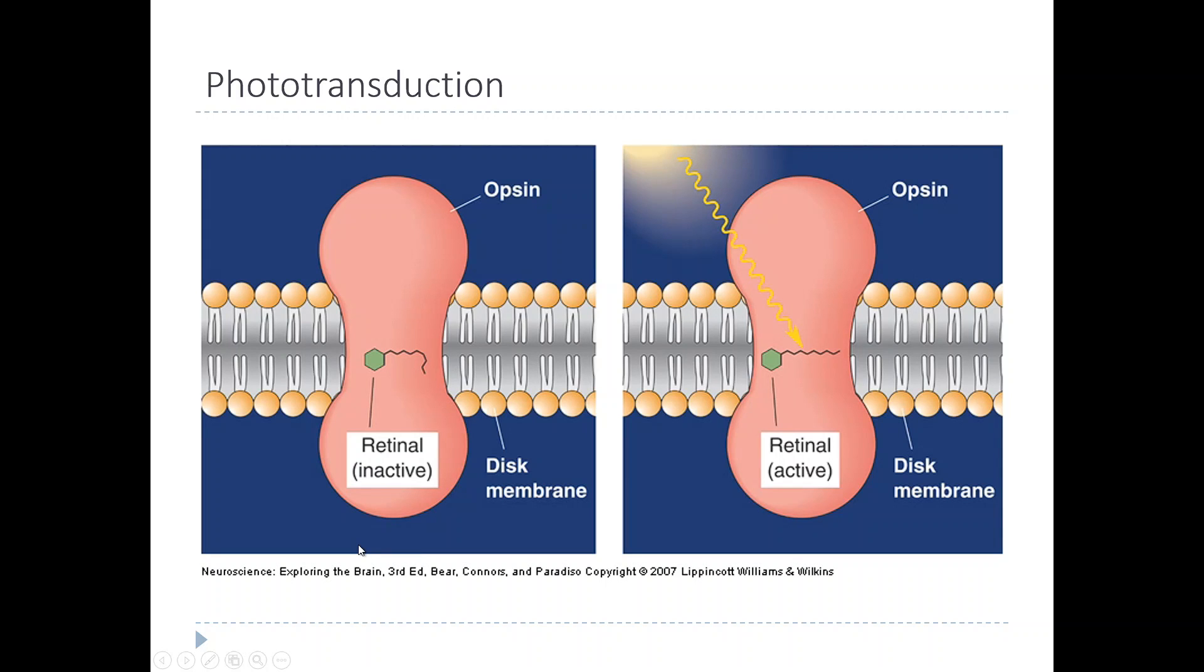Okay, so now let's talk about phototransduction. This means the process of turning a photon of light into a signal that the brain can interpret, meaning an action potential.